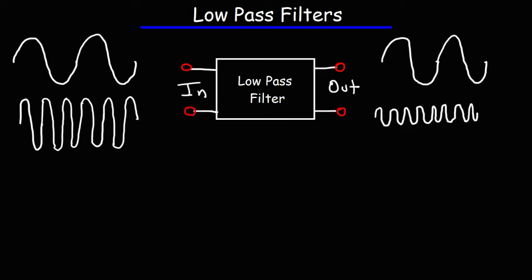In this video, we're going to talk about low-pass filters and high-pass filters. A low-pass filter passes low-frequency signals, but it impedes high-frequency signals by greatly reducing its amplitude. So in the upper left, we have a low-frequency signal, and as you can see, the amplitude has been relatively the same — it hasn't been reduced.